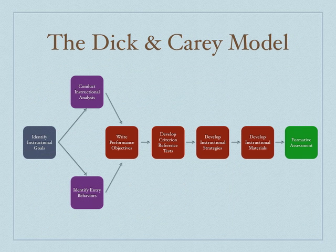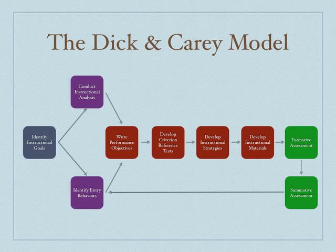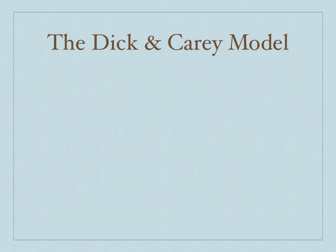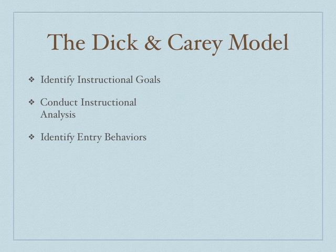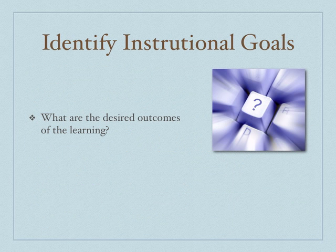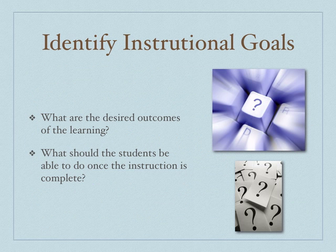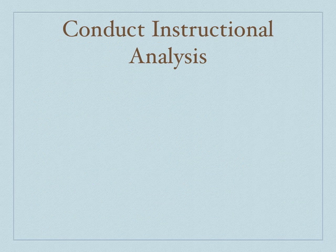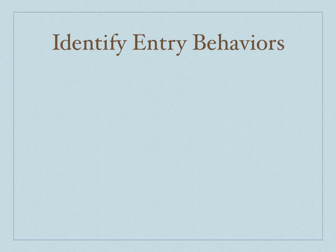Let's start with identifying the instructional goals. What are the desired outcomes of learning? What do you want the students to know, and what should the students be able to do once the instruction is complete? You're developing the basis for your objectives here. Conduct the instructional analysis: what skills do the students need in order to achieve the instructional goals — what do they have to be able to do to get where you need them to be? Identifying entry behaviors: what skills do the learners currently possess?